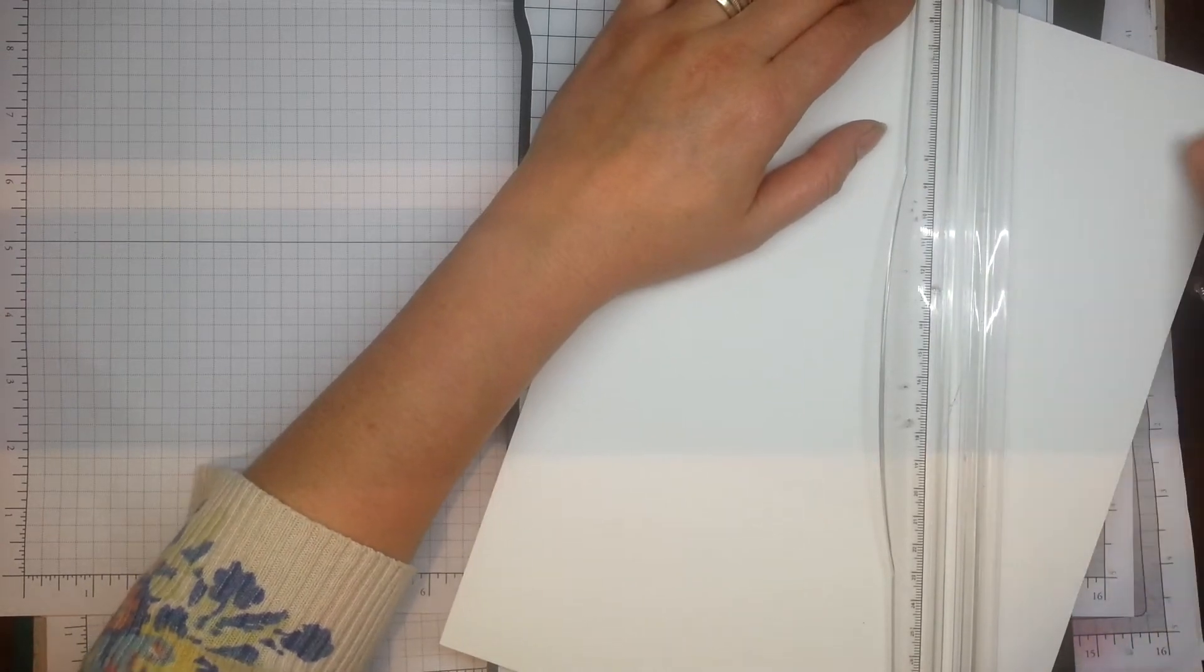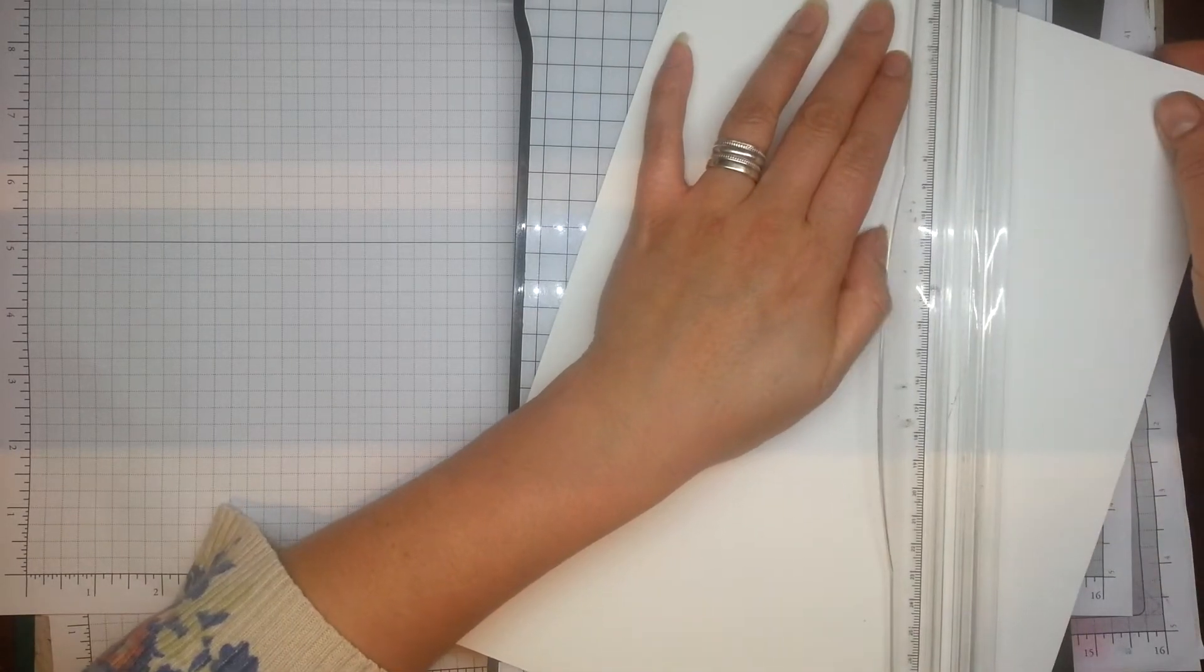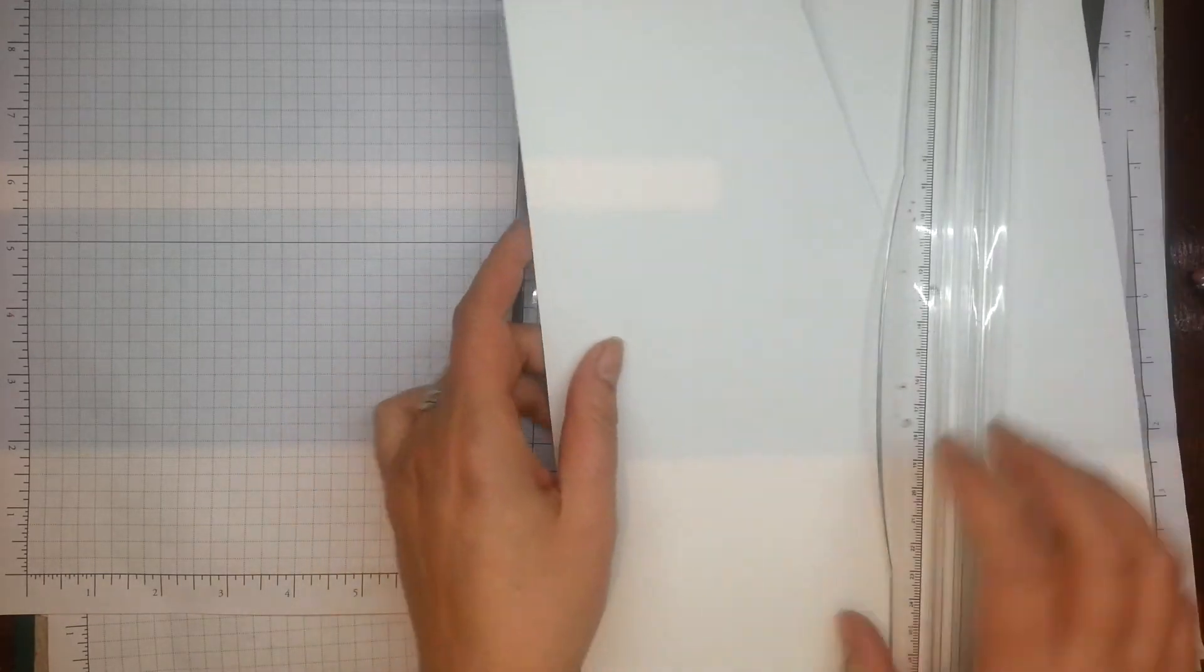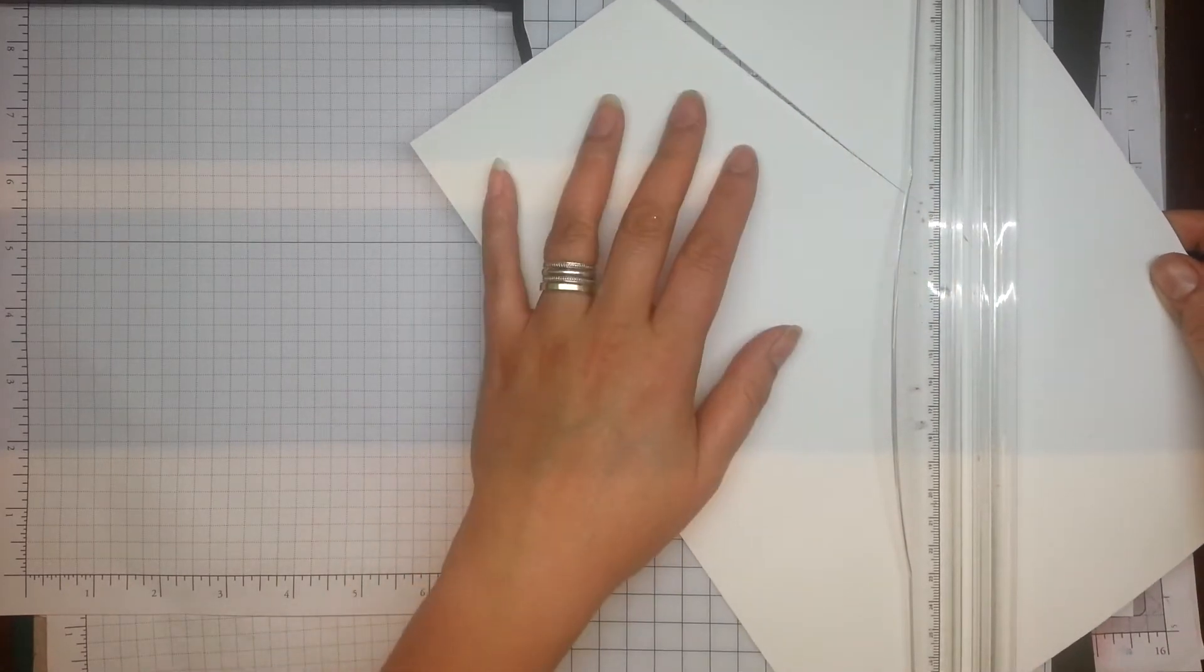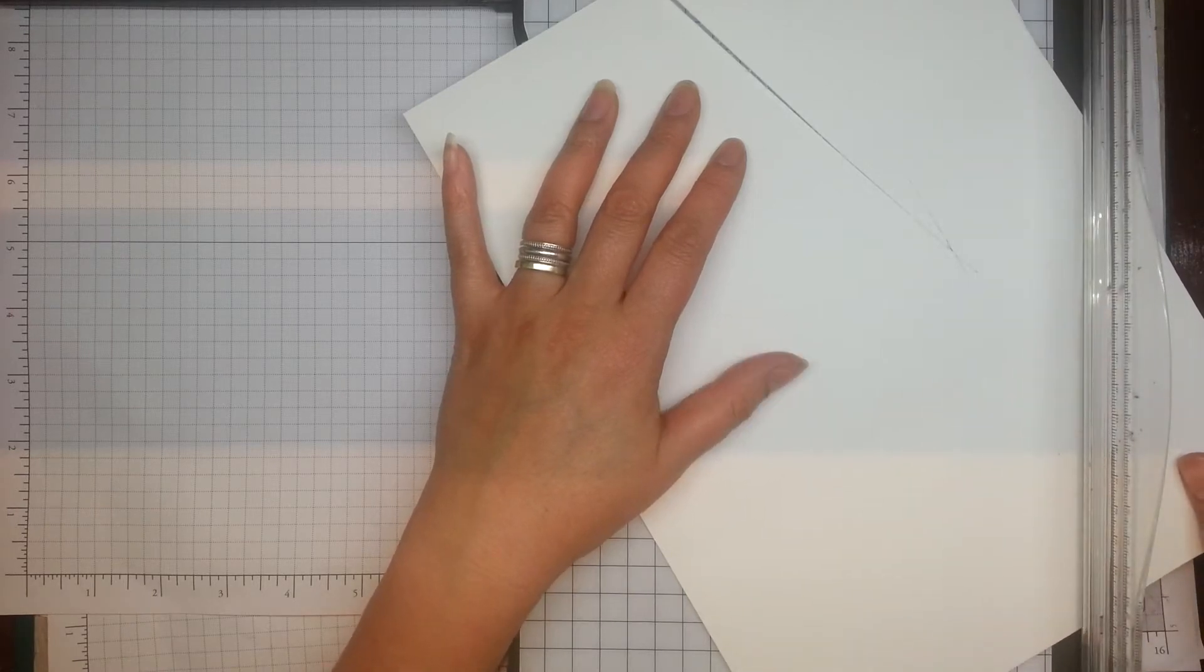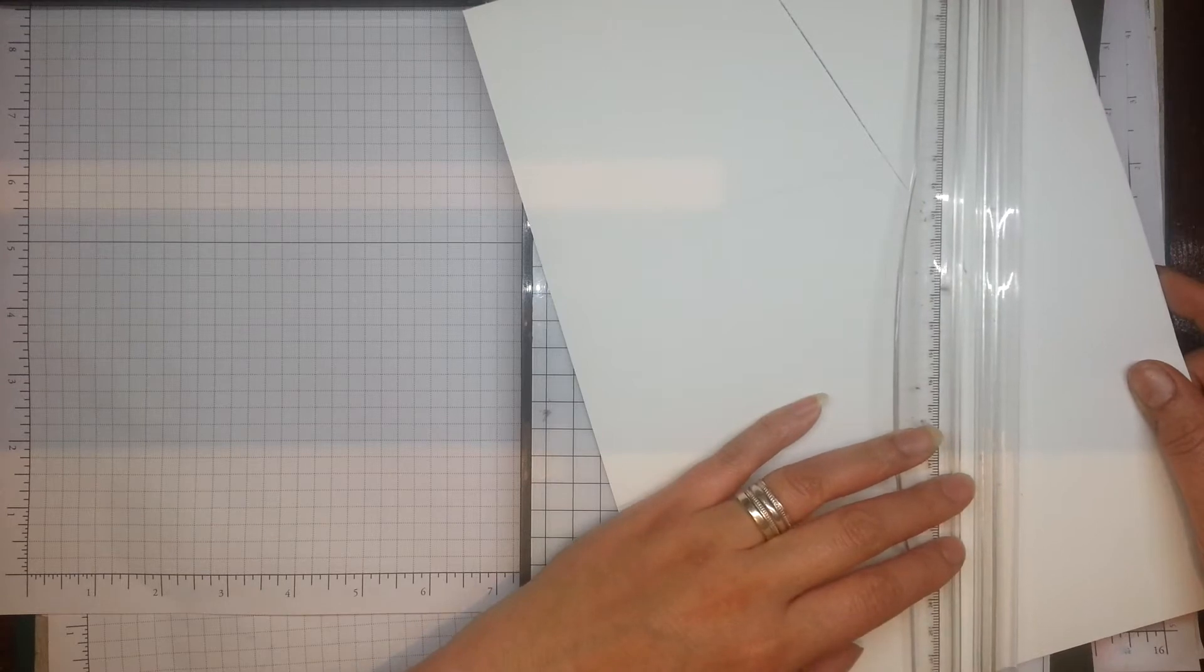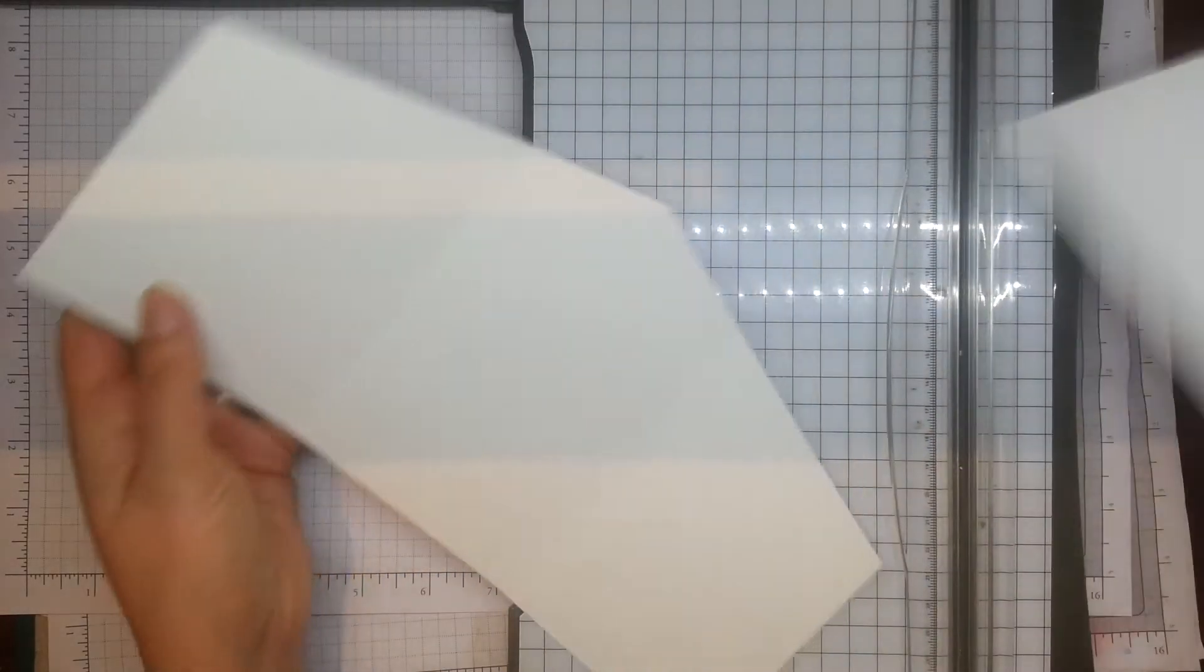And then I'm just going to line up that score mark at the side with mark here. I think that's about right. And cut. I'm going to line up the middle there with the score that I've done at the bottom.